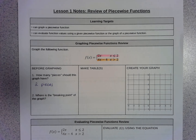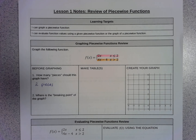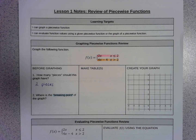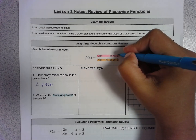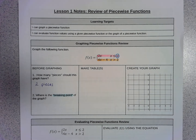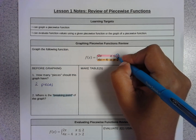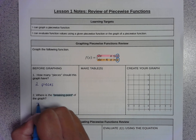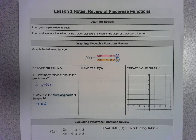The next thing to consider is: where is the breaking point? That means where does one piece end and the next one begin. Based on this domain — x less than or equal to 2 for the first piece, and x greater than 2 for the second — the breaking point is at x equals 2. That's where one equation stops and the second takes over.